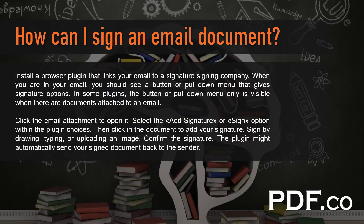Install a browser plugin that links your email to a signature signing company. When you are in your email, you should see a button or pull-down menu that gives signature options. In some plugins, the button or pull-down menu is only visible when there are documents attached to an email.